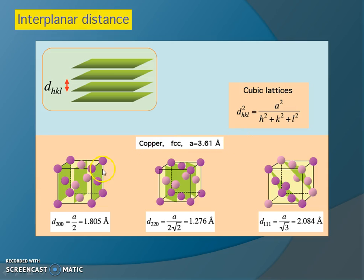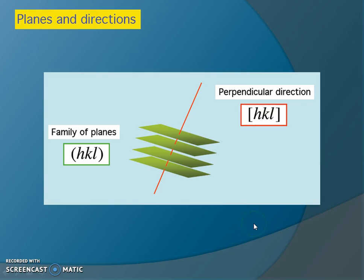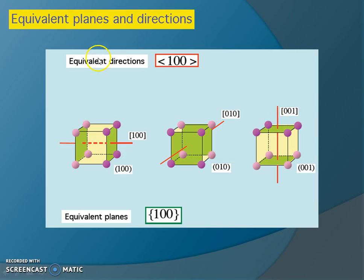In copper, d-values are given for different planes. Planes and directions are defined with the same A, B, C parameters. A family of planes can be found and is denoted in curly brackets. Equivalent planes can be identified, and these planes and directions together define the full crystallographic orientation of the material.